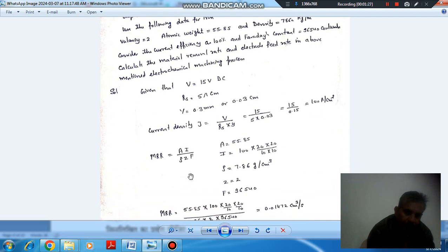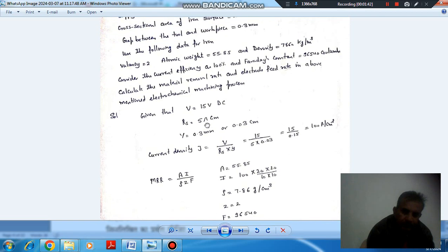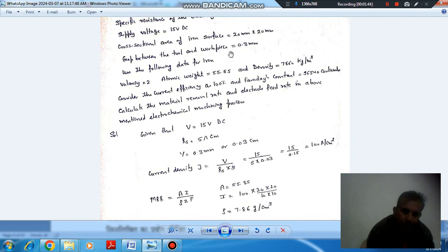We know that in electrochemical machining, metal removal rate is AI by nF rho. Here, A is atomic weight that is 55.85. I is current. From current density, we can find current as current density into area. Area is 20 mm by 20 mm, so we can use current density times 4 cm square.